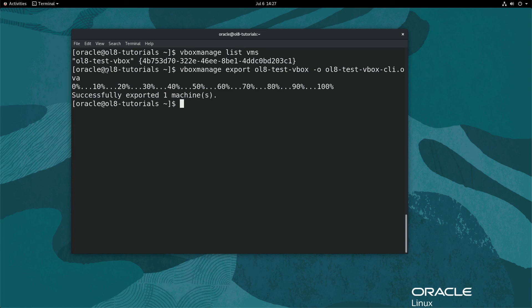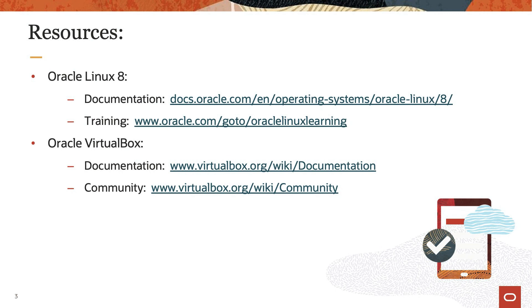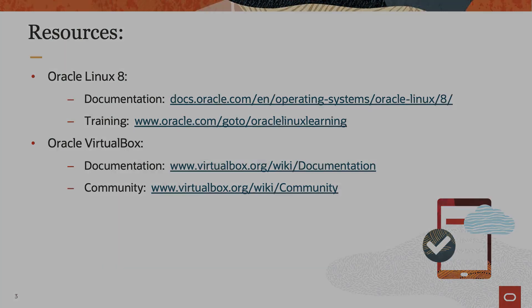That completes this demo showing two methods to export a VirtualBox VM to OVA format, leveraging both the graphical interface and the command line. More details are available in the VirtualBox documentation. Thank you for watching this video and enjoy using VirtualBox on Oracle Linux 8. Please check our additional information on Oracle Linux 8 in the Oracle Linux 8 documentation or Oracle Linux Learning Library. Thank you.